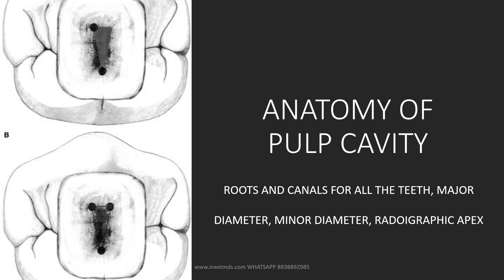Next topic is anatomy of the pulp cavity. You should know the total number of roots and root canals for all teeth — mainly the maxillary first molar, mandibular first molar, maxillary first and second premolar, and mandibular first and second premolar, as the number of roots and canals varies. Also know what is major diameter, minor diameter, and radiographic apex.